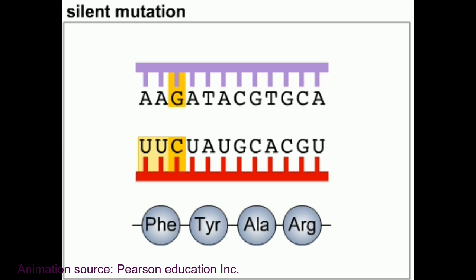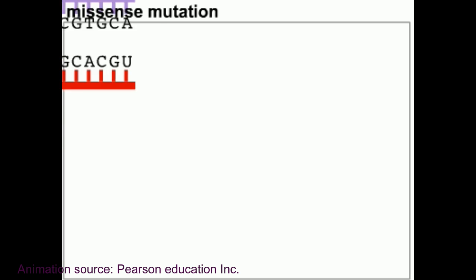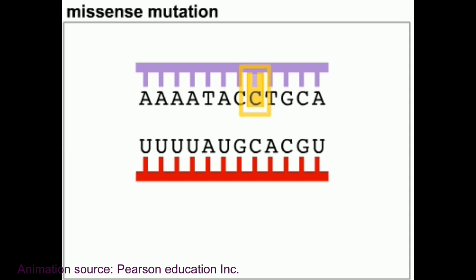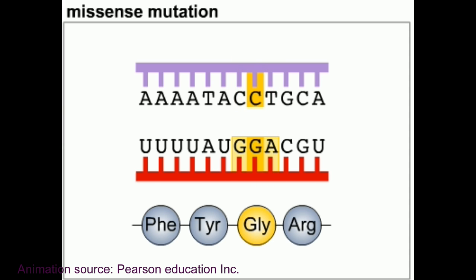Next is the missense mutation. If a base substitution mutation causes a single amino acid to change in the protein, the mutation is a missense mutation. Depending on the nature of the amino acid substitution, the missense mutation can be harmful, neutral, or even beneficial in very rare cases.